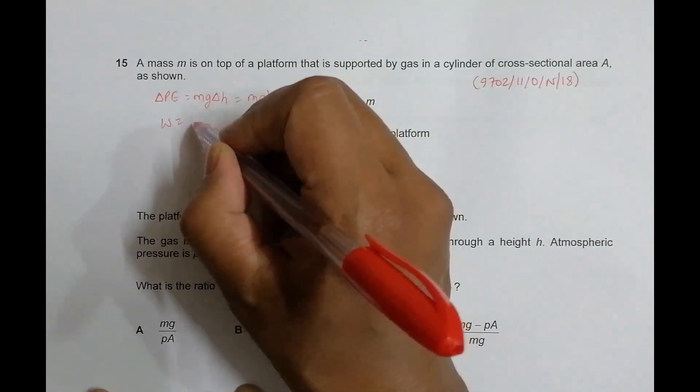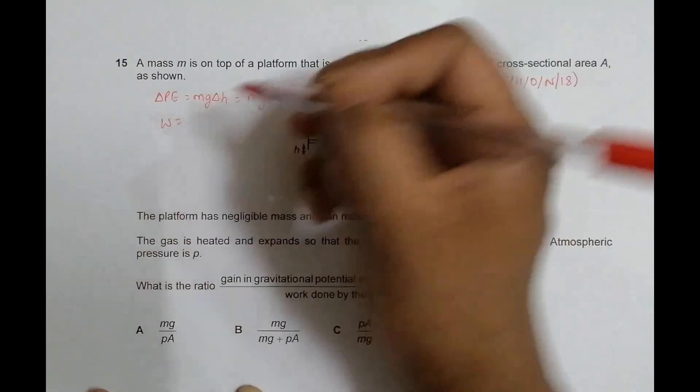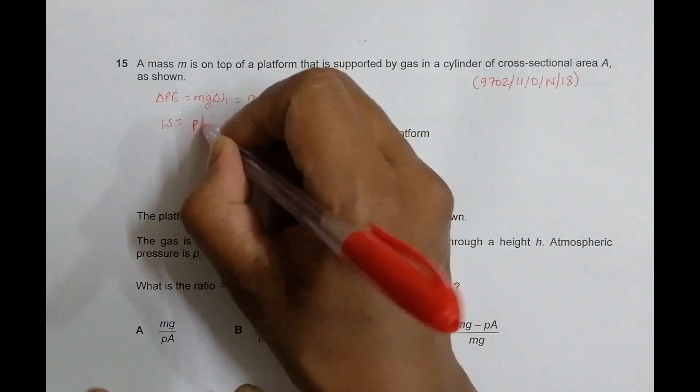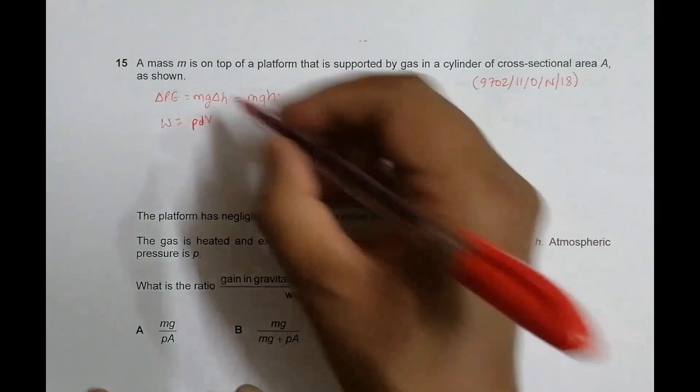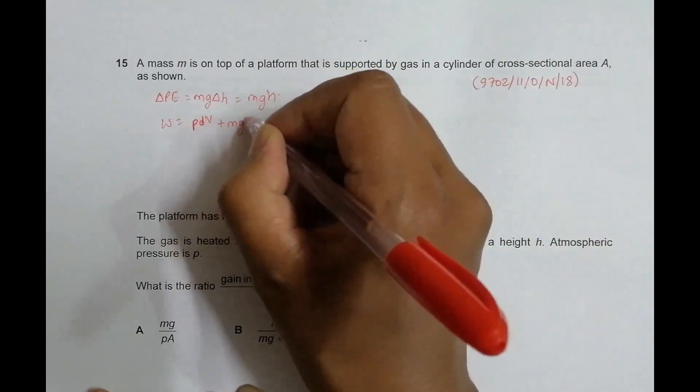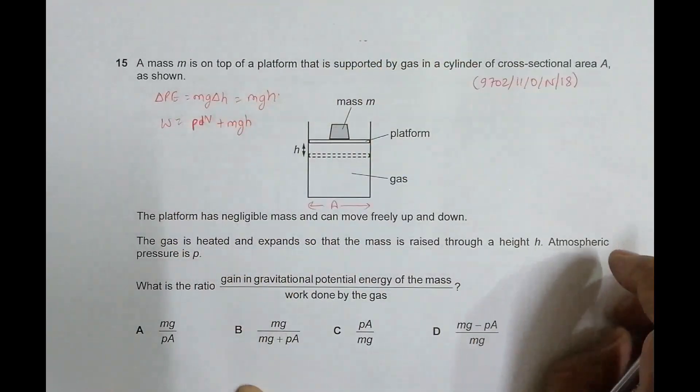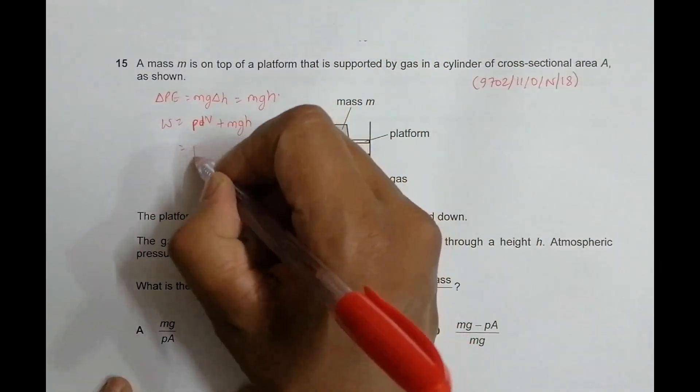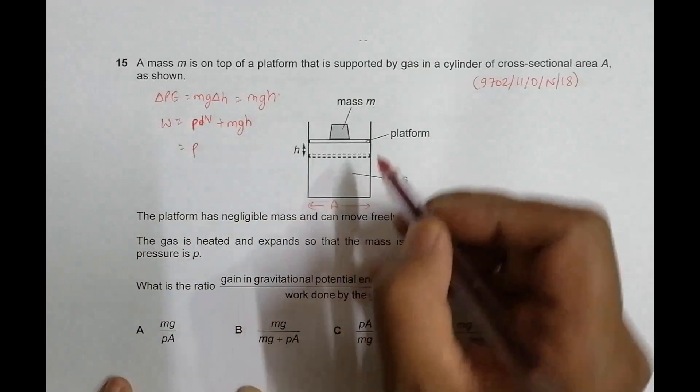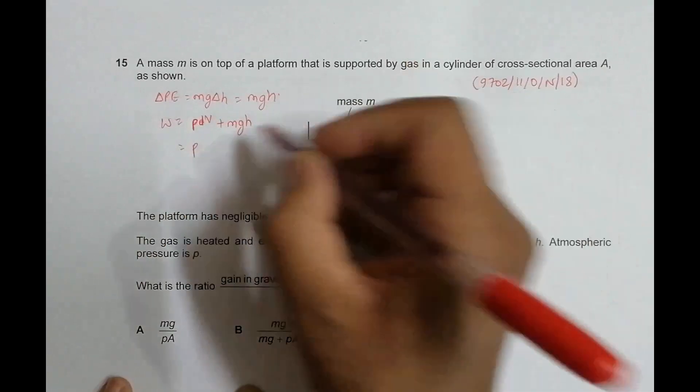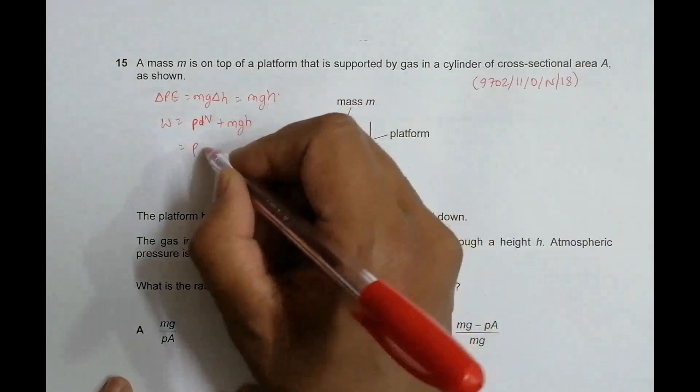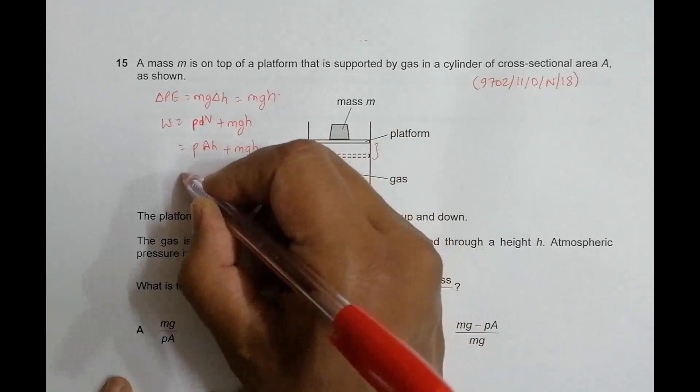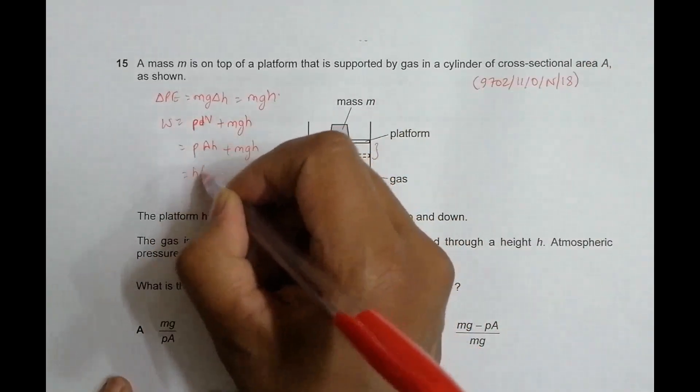The work done against expansion is equal to P into dV, which is pressure times change of volume, plus the work done against gravitational attraction equals mgh. So P dV becomes: P is okay, dV equals the cross section times the change in height, so the change in volume is cross section A times height h, plus mgh. If I take h as common, it will be h times (mg plus P times A).